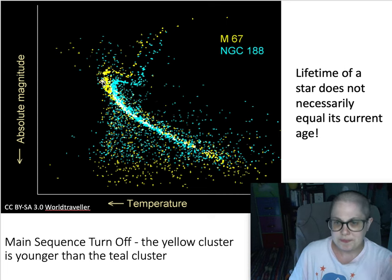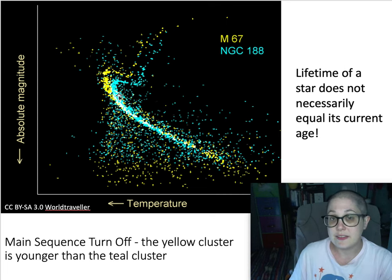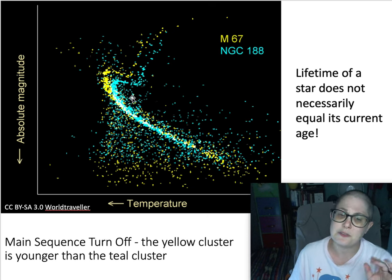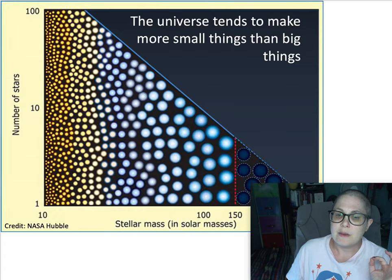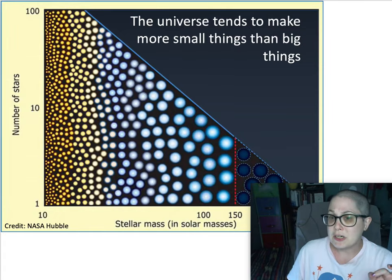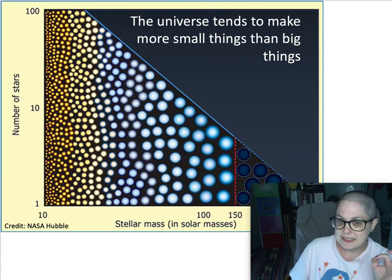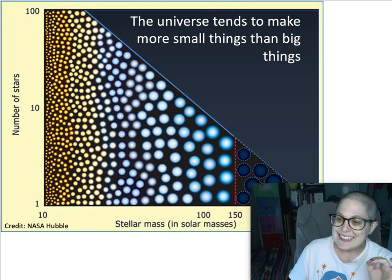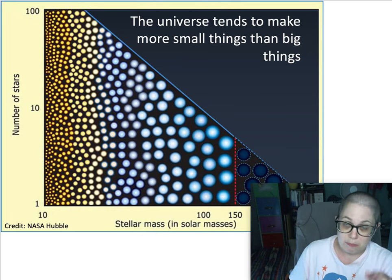In this example, the yellow cluster is younger than the teal cluster. Something very important to keep in mind: the mass of a star tells us its lifetime — how long it's going to live overall. It does not tell us anything about the current age of that star.